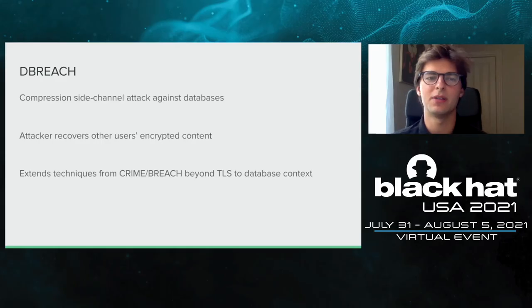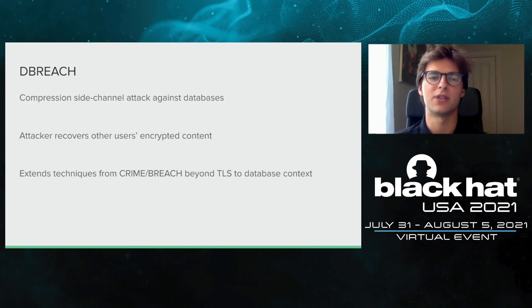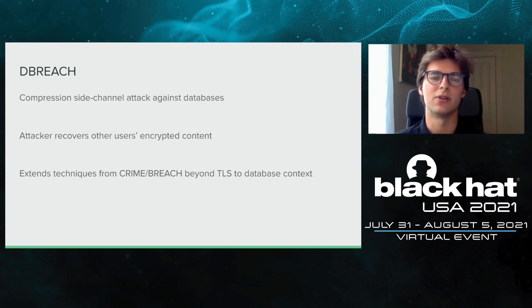Encryption is one of the most important tools for protecting sensitive data, both at rest and in transit. Additionally, compression is often paired with encryption in order to save on storage costs. However, combining the two can be risky and sometimes leak the underlying plaintext information. This class of vulnerabilities is known as a compression side channel.